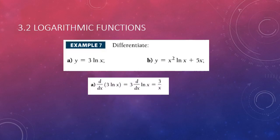Okay, for a, derivative of 3 times the natural log of x is 3 times 1 over x, which is 3 over x.